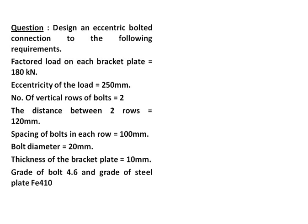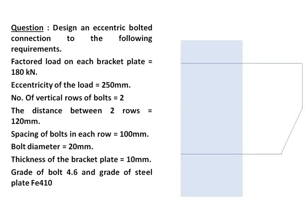The grade is given to be 4.6 and the grade of steel plate is Fe410. Using these requirements, we draw the figure — this is the gusset plate and this is the flange which are to be joined. The factored load on each bracket plate is 180 kN.